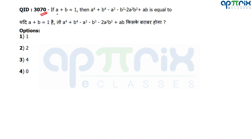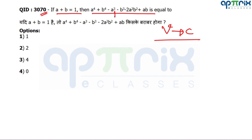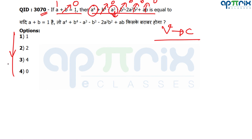Question number 70: If A + B = 1, what is the value of the expression? This is easy — the answer is a constant regardless of variables. Put B = 0, then A = 1. All cross terms vanish. The expression reduces to A⁴ − A² = 1 − 1 = 0. The answer is 0. Thank you all for watching the video lesson.